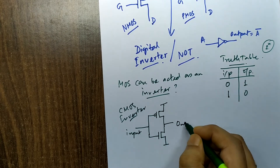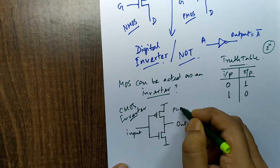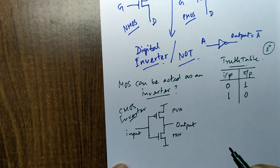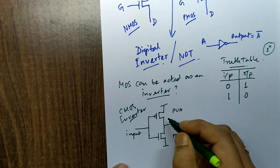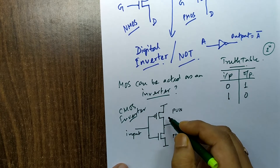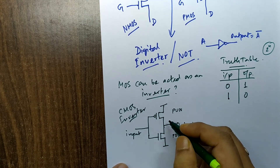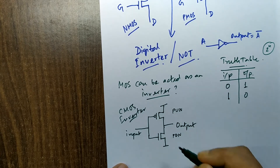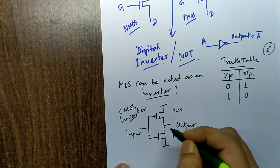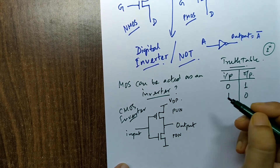As you know, the upper network in a circuit is called the pull-up network, and the lower network is called the pull-down network in VLSI. The pull-up network consists of PMOS transistors. Remember that this is a mirror circuit — if the pull-up network has 4 PMOS transistors, the pull-down network will also have 4 NMOS transistors. For an inverter, one PMOS and one NMOS form the CMOS combination.